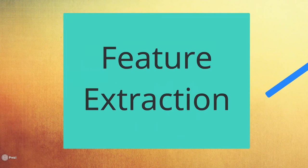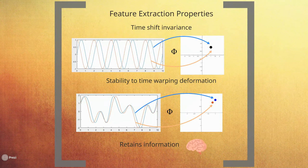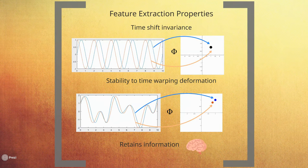A good feature extractor has the following properties. It must be invariant to local time shifts. This means that a signal and a shifted version will have the same feature space representation. Also, it must be stable under time warping deformations, meaning that a signal and its slightly time warped version will be mapped closely in the feature space. It also retains vital information such as frequency content.